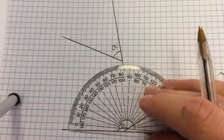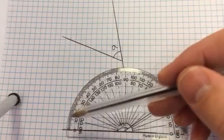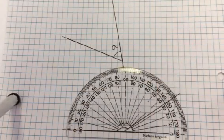You must always read from zero. I know that there's zero on both sides of the protractor, but often students aren't sure which side to read from.